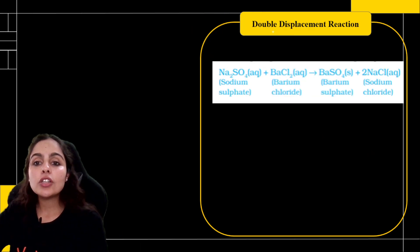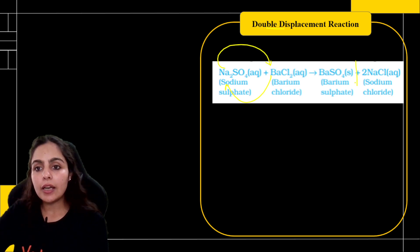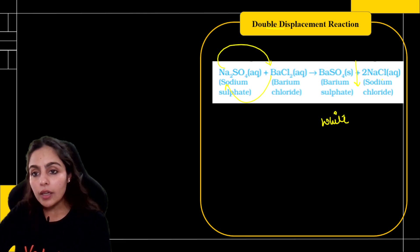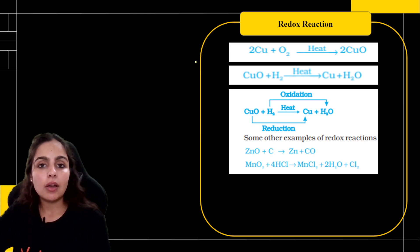Moving on to double displacement. In double displacement, precipitation example is given to you. Barium sulfate will be formed, that's white in color. Exchange of ions has happened, and any other will be your by-product.